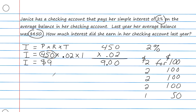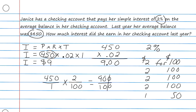Another way to solve these problems is by using fractional values. We write 450 over 1 multiplied by 2 over 100. Multiplying straight across gives 900 over 100, and canceling the zeros gives 9 over 1, which equals 9. Alternatively, cancel one zero from each, reduce 2 over 10 to 1 fifth, then divide 45 by 5, which is also 9.